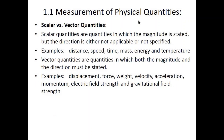Scalar quantities have magnitude only — direction is either not applicable or not specified. Examples: distance, speed, time, mass, energy, and temperature. Vector quantities have both magnitude and direction — both must be present. Examples: displacement, force, weight, velocity, acceleration, momentum, electric field strength, and gravitational field strength.